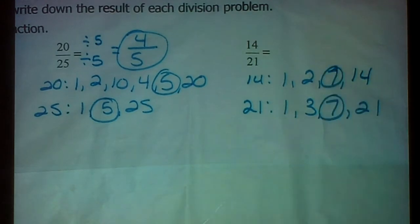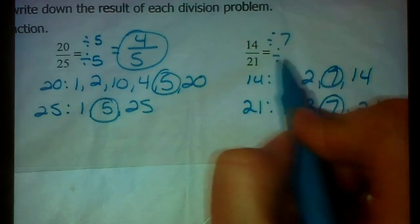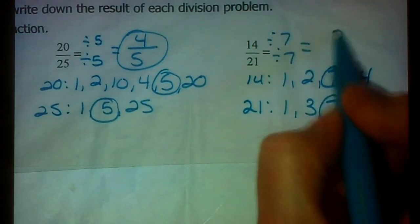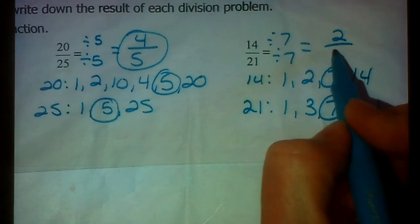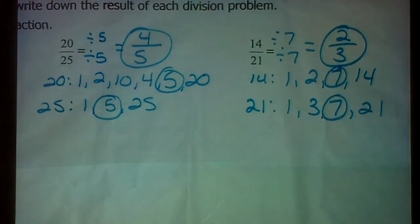7 is their greatest common factor. Divide top and bottom by 7. 14 divided by 7 is 2. 21 divided by 7 is 3. So 2 thirds. Go ahead and do your Section 2 practice problems.